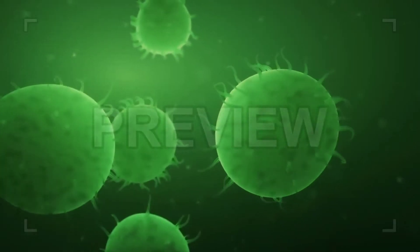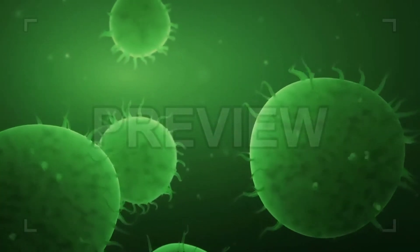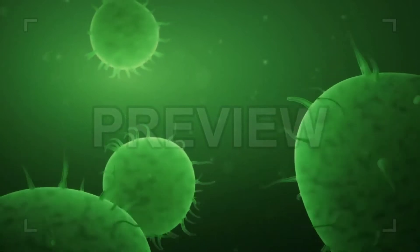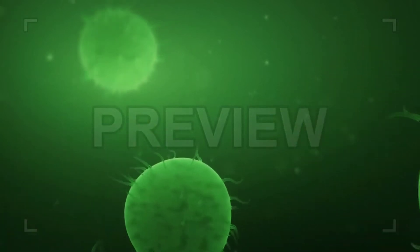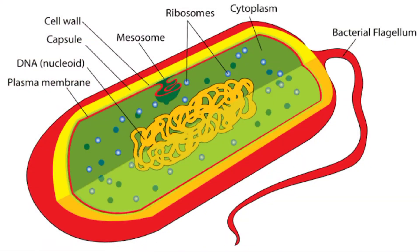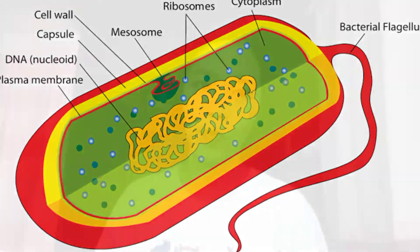Microbial diversity considers the vast array of microorganisms — the smallest forms of life — which exist everywhere. There are three primary groups of microorganisms: bacteria, archaea, and eukaryotes. Bacteria and archaea are prokaryotes with their genetic material held in a single chromosome, while in eukaryotes most of the genome is held in multiple chromosomes.